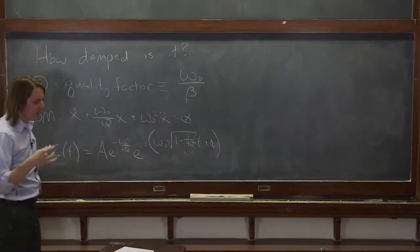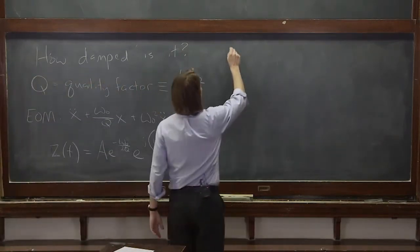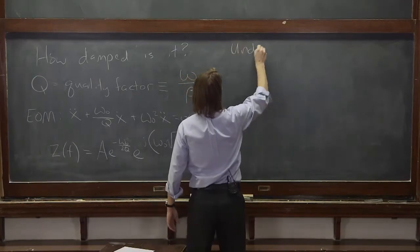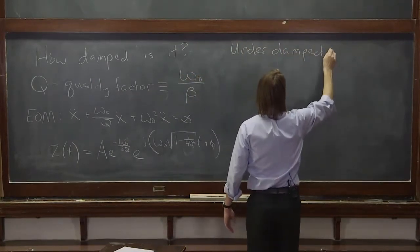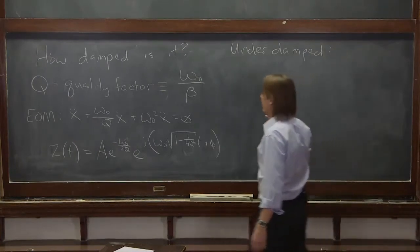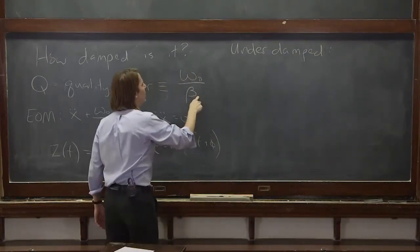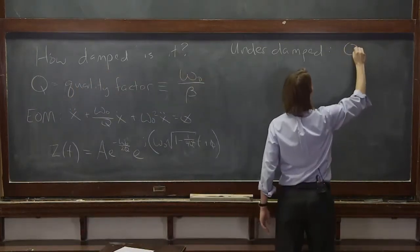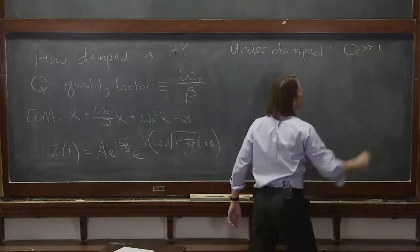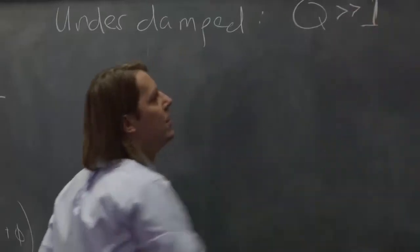This can lead to a few different situations. You can have what's called underdamped. And as the name implies, this means the damping is small. If the damping is small, then this number is small and this number is big, and Q is very big. So Q is much bigger than 1.